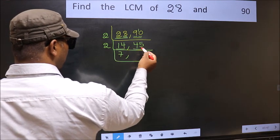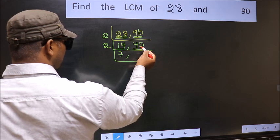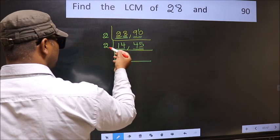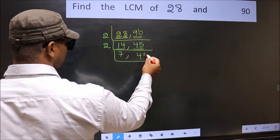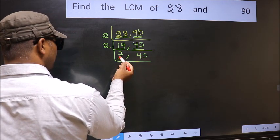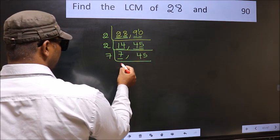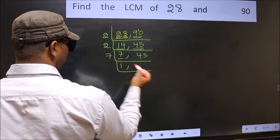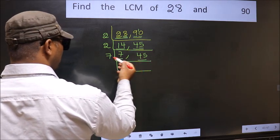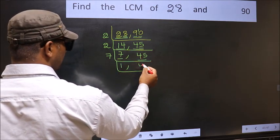The other number 45, last digit 5, not even, so this is not divisible by 2, so we write it down as it is. Now here we have 7, 7 is a prime number, so 7, 1, 7. The other number 45, not divisible by 7, so we write it down as it is.